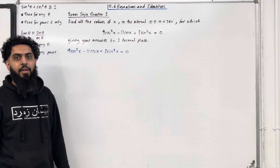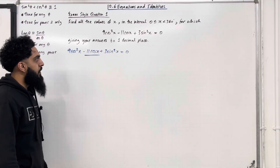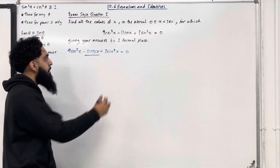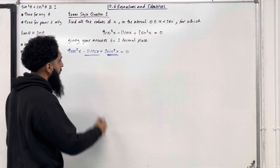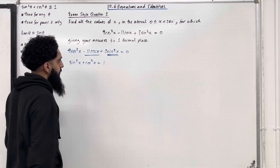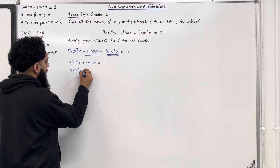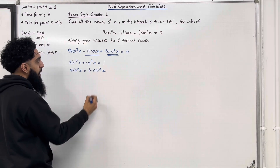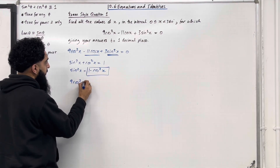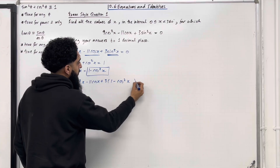Next, I'm going to underline the non-squared term, which is the −11cos x. So what we want to do is rewrite this entire equation in terms of cosine — we have to eliminate the sine. We know that sin²x + cos²x = 1, so making sin²x the subject gives sin²x = 1 − cos²x. I'm going to replace sin²x with (1 − cos²x), giving 9cos²x − 11cos x + 3(1 − cos²x) = 0.